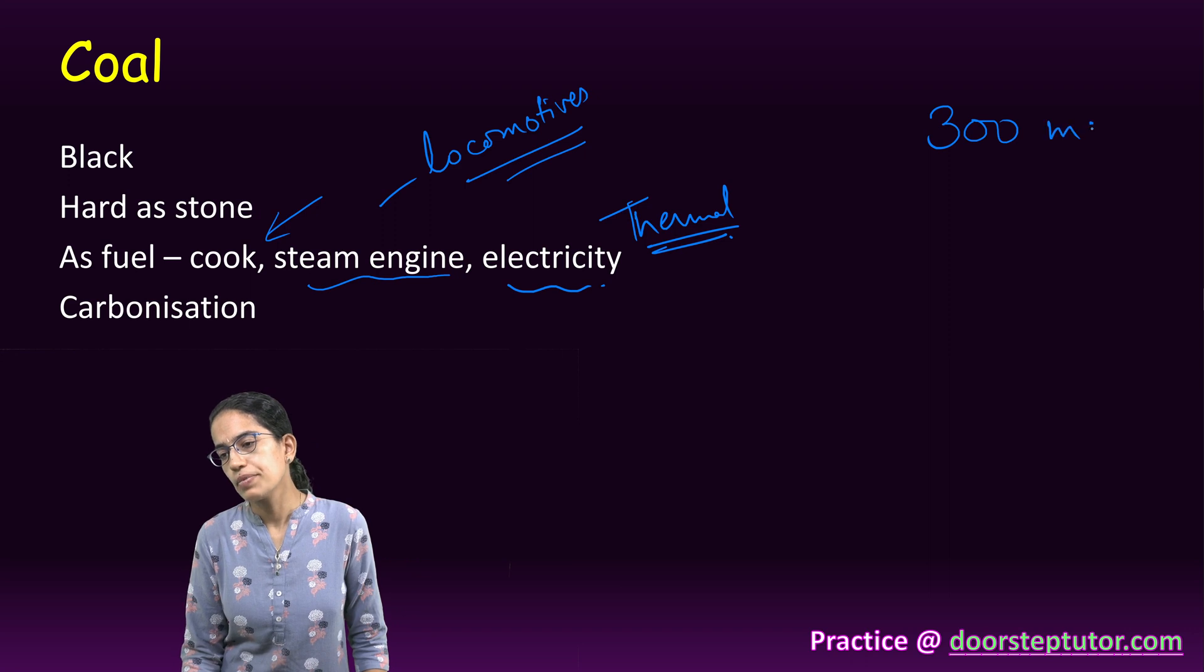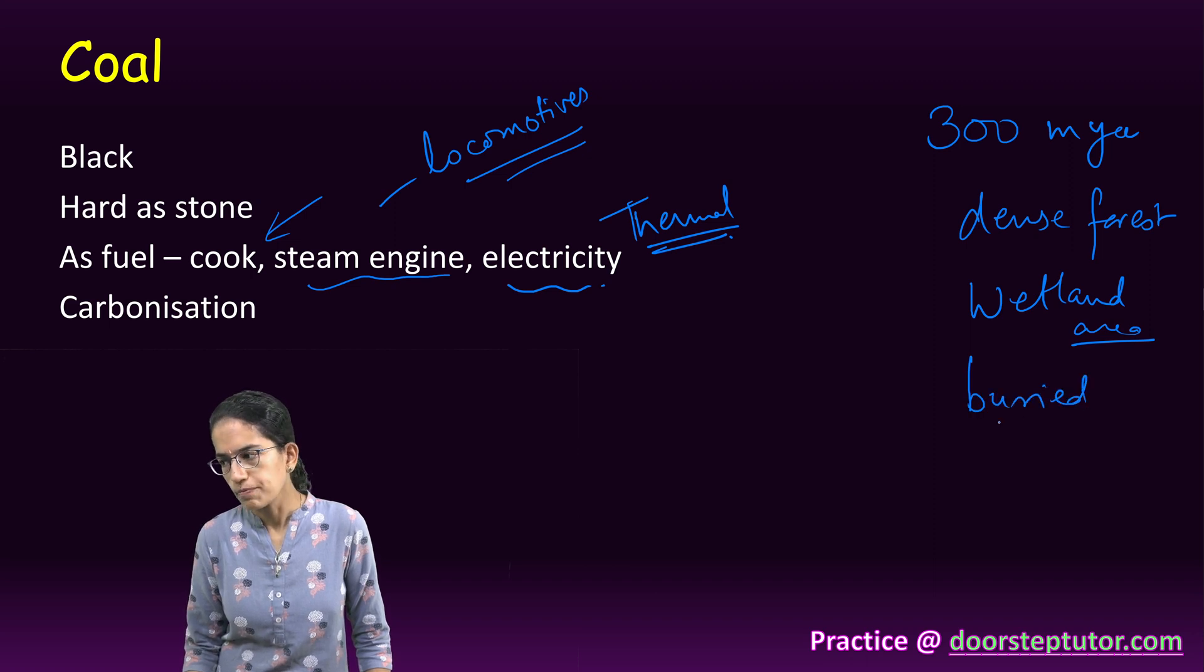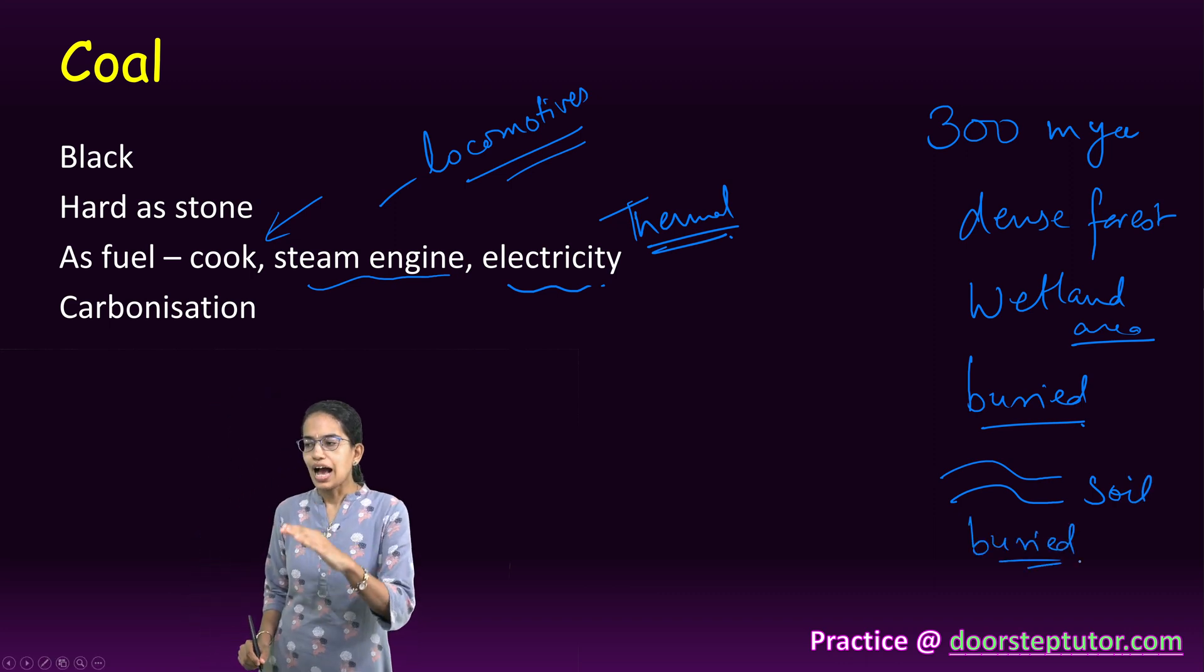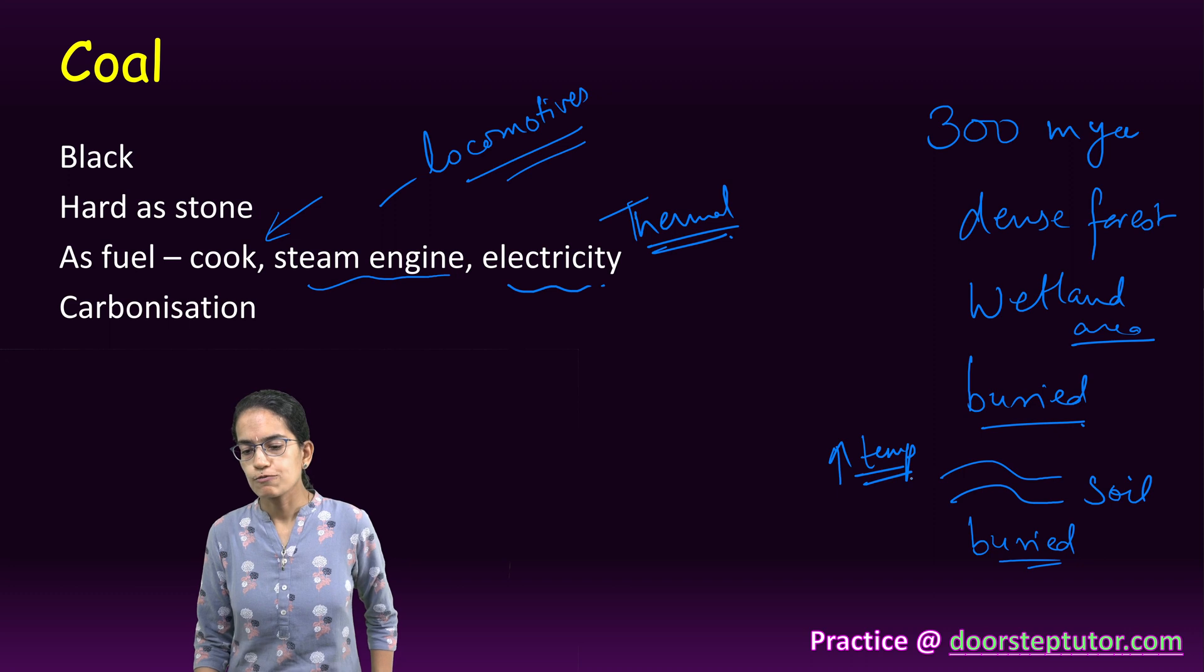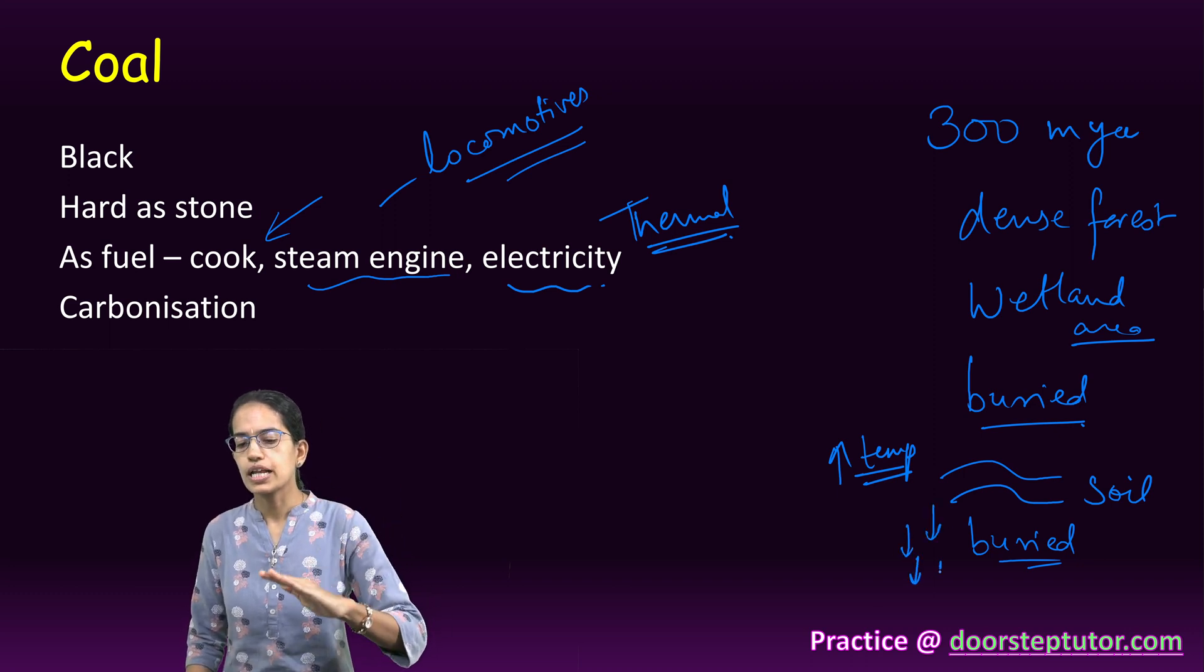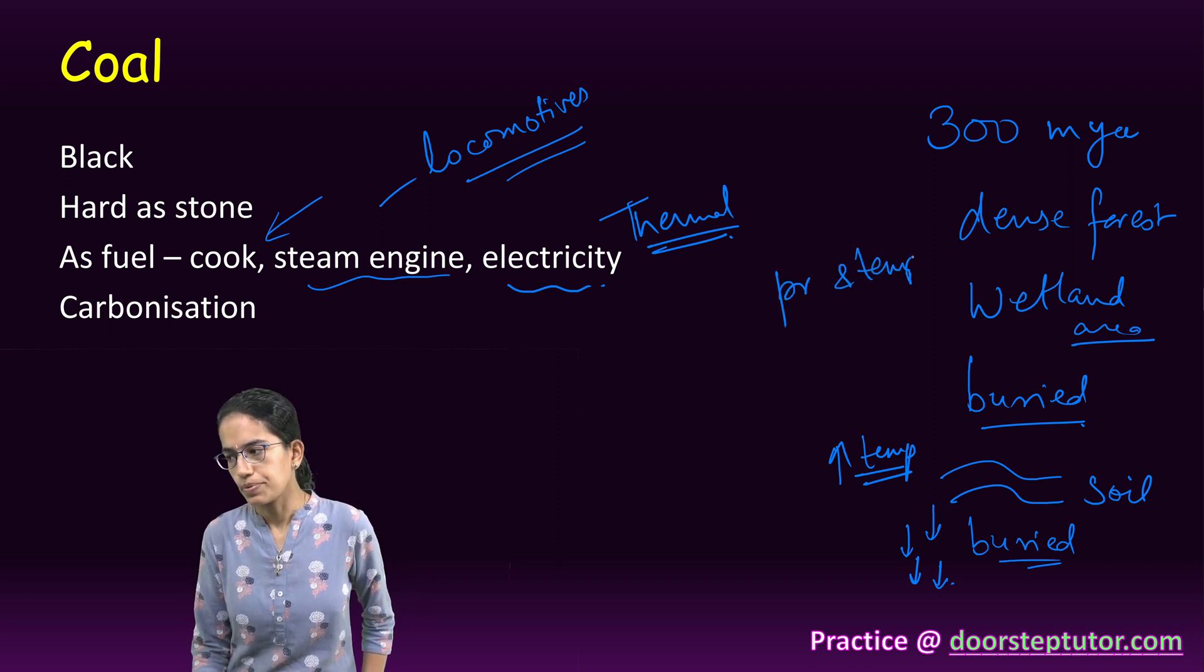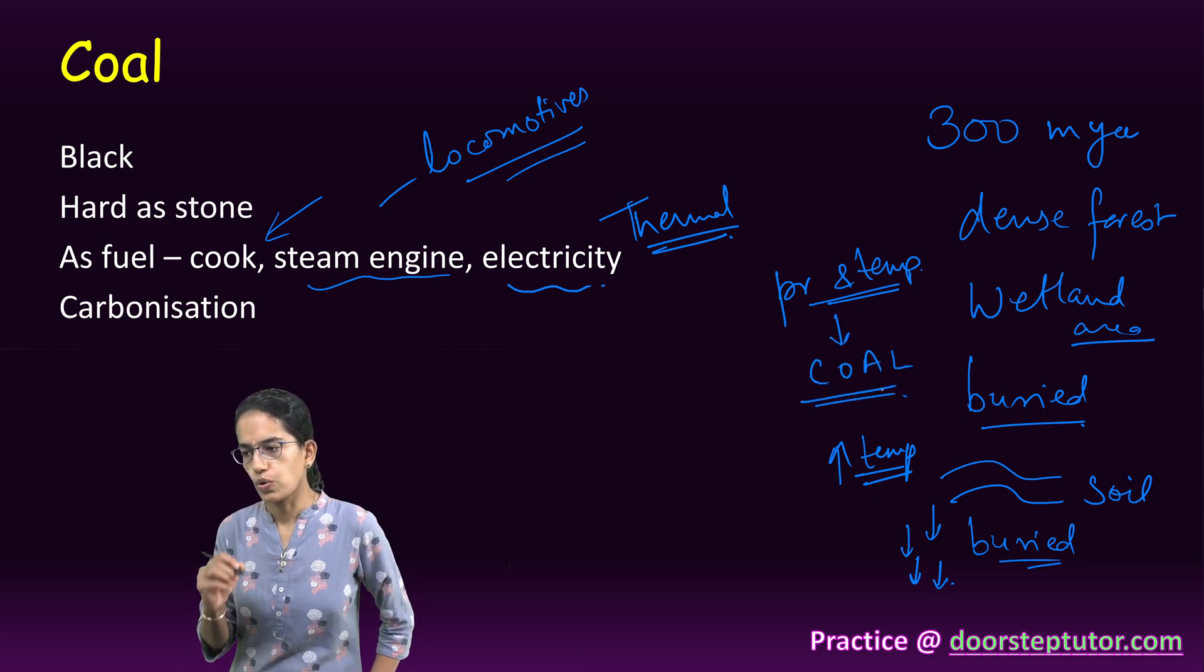Nearly 300 million years ago, earth had a cover of very dense forests, mainly in low-lying wetland areas. This forest got buried under the soil. When they buried, soil was deposited on top of it. As a result, the temperature started to increase and the material that was buried actually sank deeper and deeper. With high pressure and high temperature, this material got converted into coal.